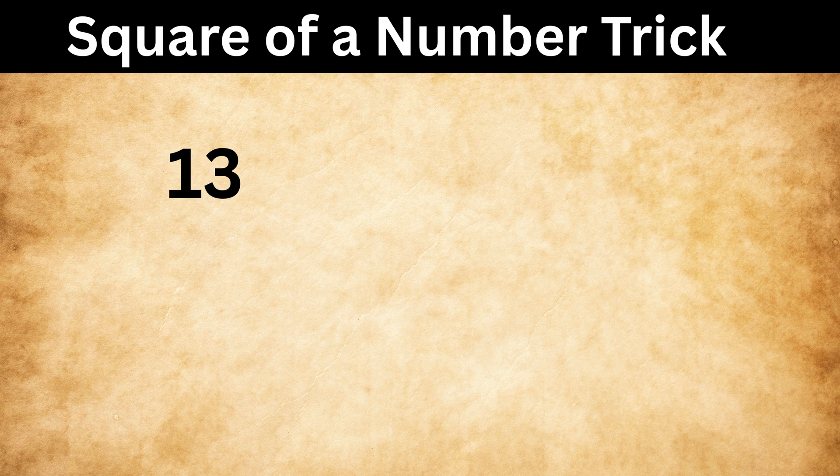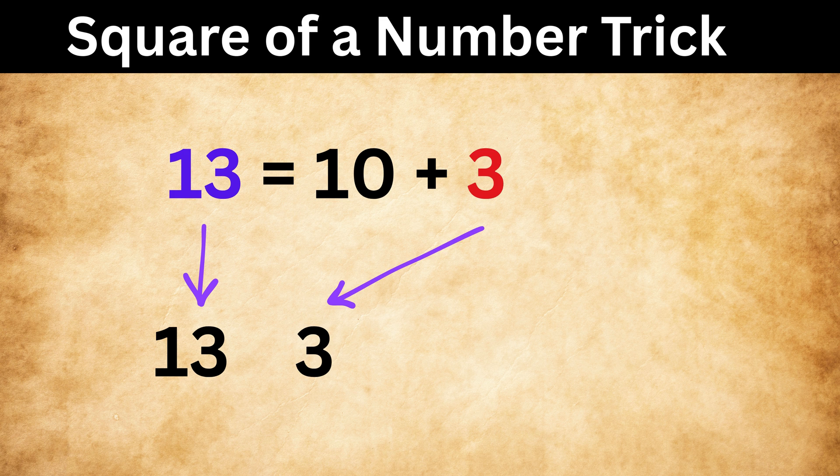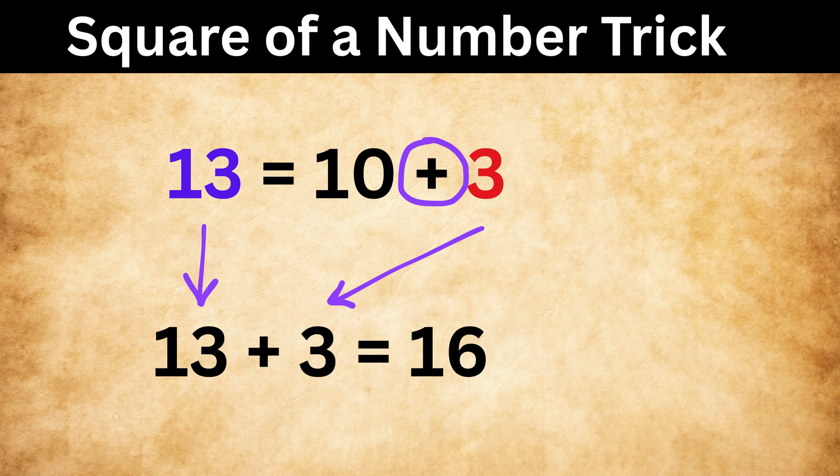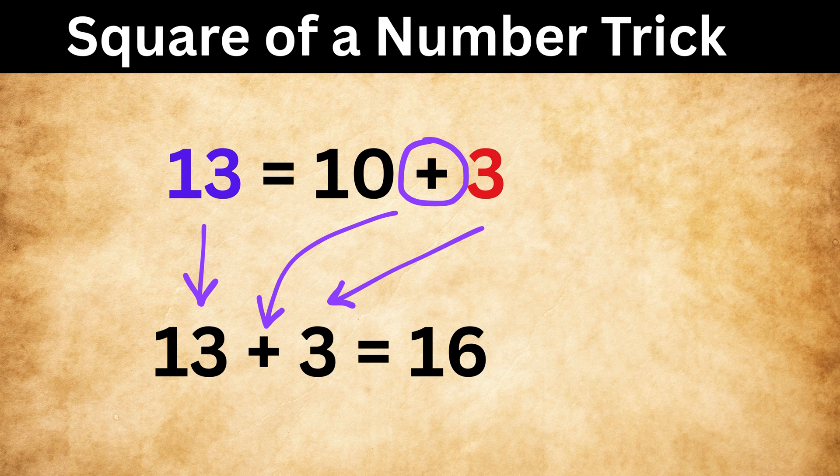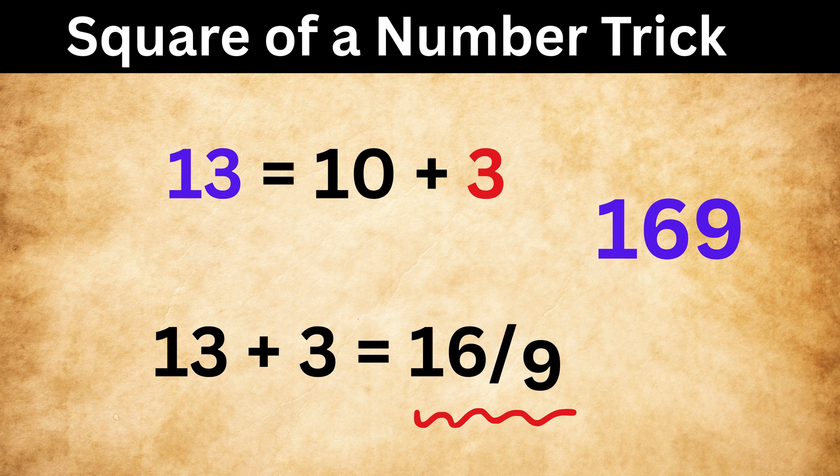Let us try with 13 square. Look carefully. Write 13 as 10 plus 3. Now take this 13, and then take this 3, and add them. We get 16. See, because here we have plus sign, so we are adding them, else we would have subtracted it. Now put a slash like this. Then write 3 square, which is 9, and we are done. 13 square is 169.